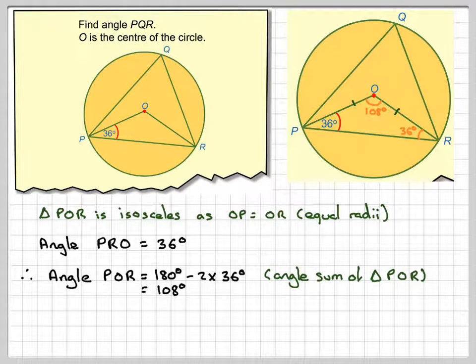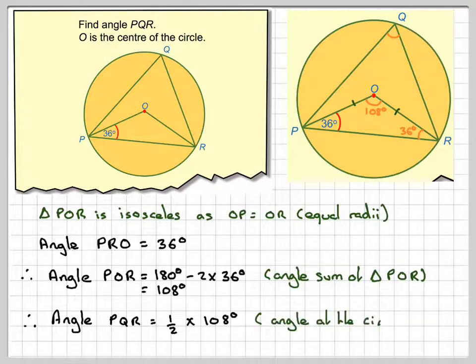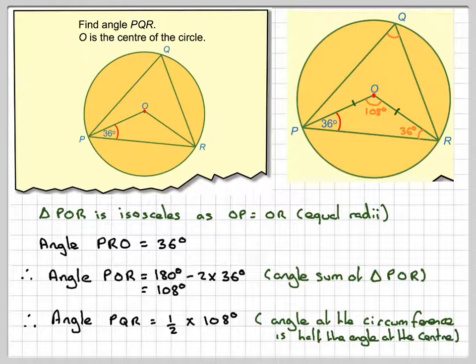So now we've got the situation where this is the angle at the centre and this is the angle at the circumference. This is the one that we wanted to find. So that's just going to be half times 108. Angle at the circumference is half the angle at the centre. Remember that idea? That's going to give me 54 degrees.